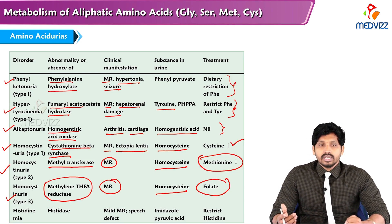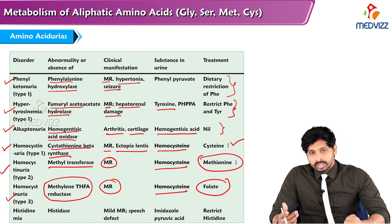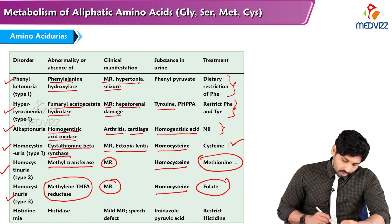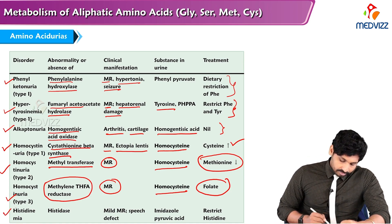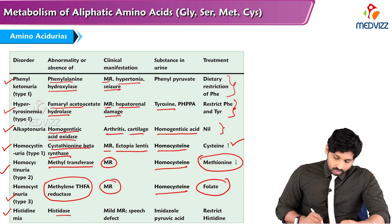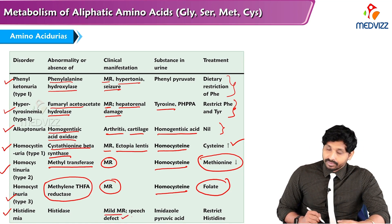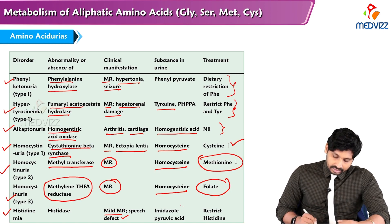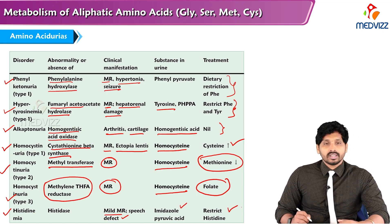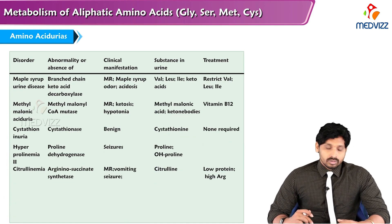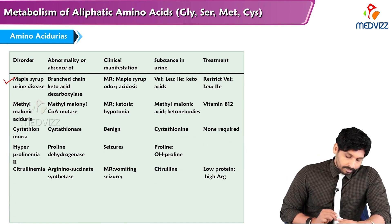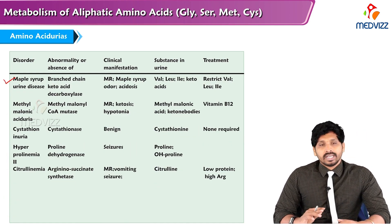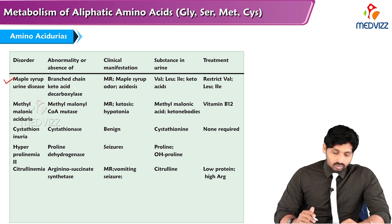Histidinemia is caused by histidase enzyme deficiency, leading to mild mental retardation and speech defects. Imidazolepyruvic acid is the accumulated product in the urine. Treatment is to restrict histidine in the diet.